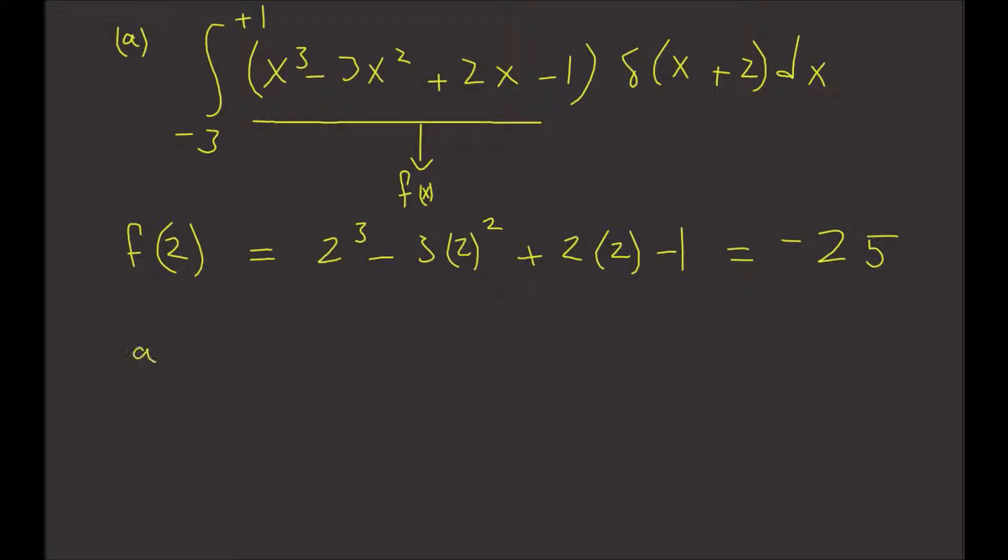The second problem is going to be part b. So it's the integral from 0 to infinity of [cos(3x) + 2] times our delta function δ(x - π) dx.